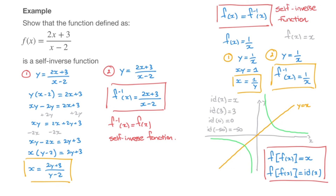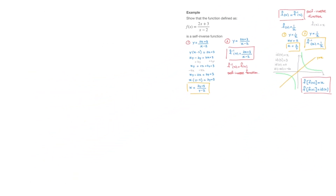As I said earlier, another way of showing that this function is a self-inverse function is to find the composite of f with itself and show that it's equal to x, or equal to the identity function. This requires quite a bit of algebra, so let me use method 2. Our function is f of x equals 2x plus 3 over x minus 2.